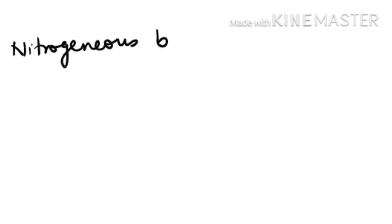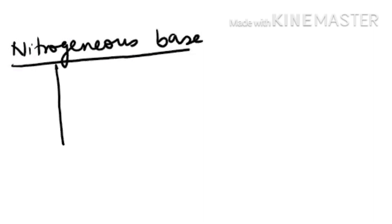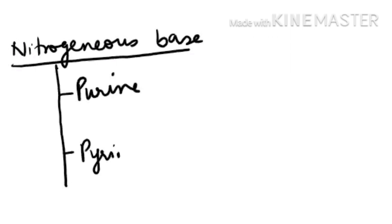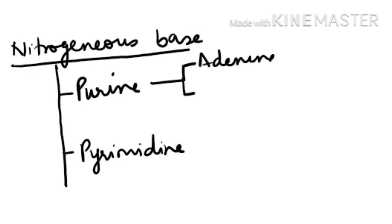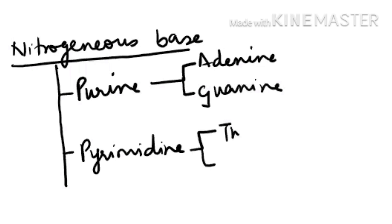Now see the nitrogenous bases. There are two types of nitrogenous bases: one is purine and the other is pyrimidine. Purine is again of two types — adenine and guanine. Pyrimidine is also of two types — thymine and cytosine.